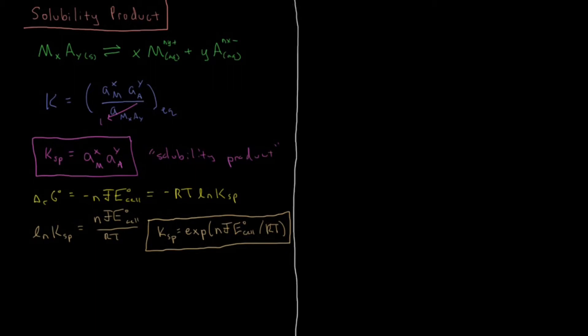So we can do an example here to see how we might be able to set up an electrochemical cell such that we can get this solubility product. Okay so if we take the following two reactions we are going to have lead 2 plus aqueous ions plus 2 electrons, so lead ions being reduced to solid lead, the standard reduction potential of that reaction is equal to minus 0.126 volts.